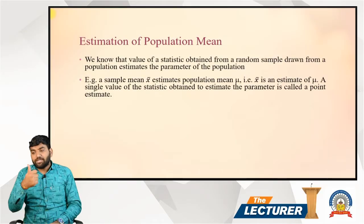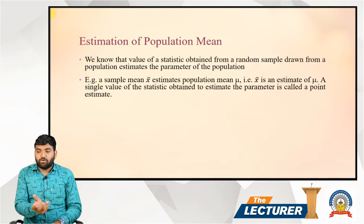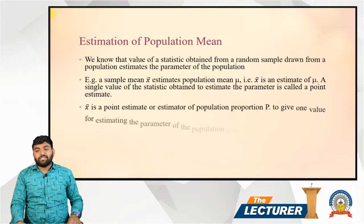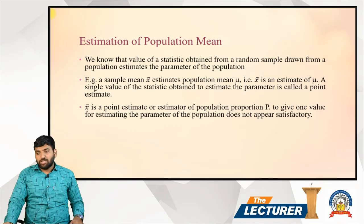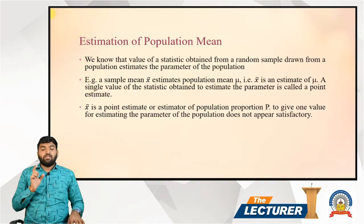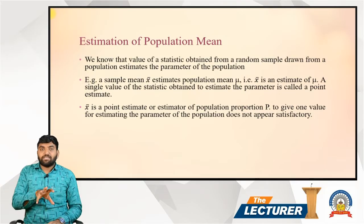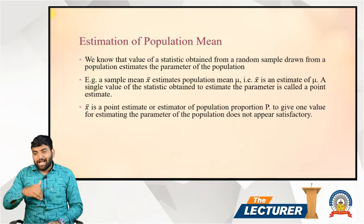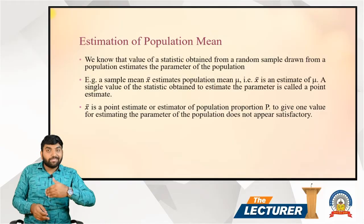A single value of the statistic obtained to estimate the parameter is called a point estimate. For example, x-bar is a point estimate or estimator of the population proportion p. However, giving one single value for estimating the parameter of the population does not appear satisfactory in practice.